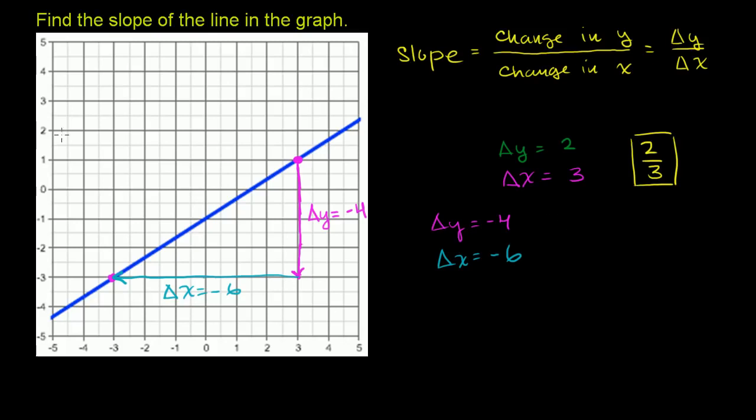So what is my change in y over change in x? My change in y over change in x is equal to negative 4 over negative 6. The negatives cancel out. And what's 4 over 6? That's just 2 over 3.